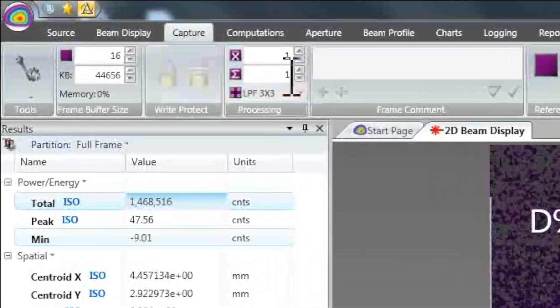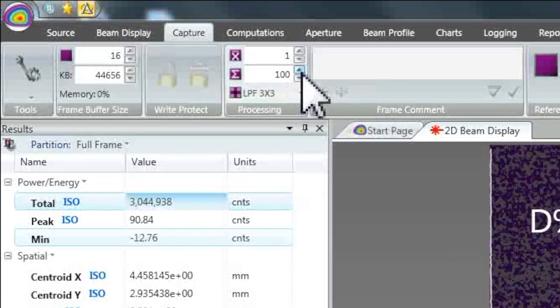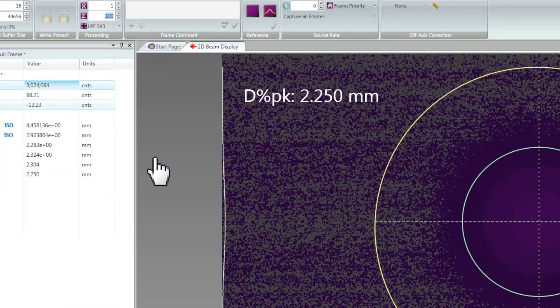Beam Gauge offers a feature called frame summing. This allows a select number of frames to be compiled or summed to build up the image to one that is visible, yet still representative of the laser source beam.